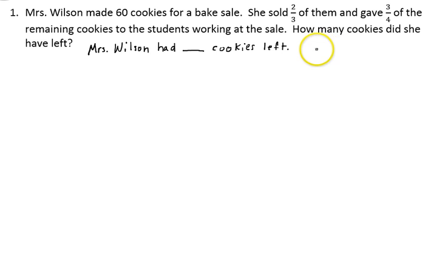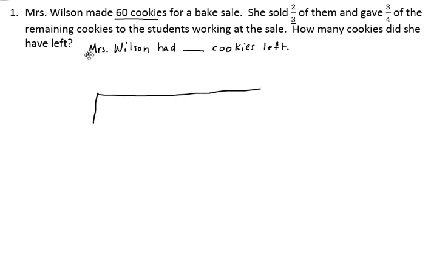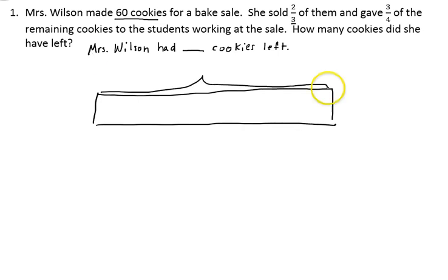Now let's go back to our question. We know she started with 60 cookies and she sold two-thirds of them. I'm going to draw a tape that represents the 60 cookies. So we have 60 cookies, and since she sold two-thirds of them, I'm going to divide the tape into three pieces, each piece being a third. Now I'm going to divide the 60 cookies into the three pieces.